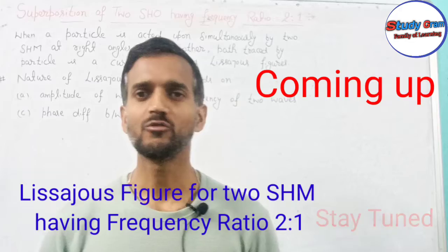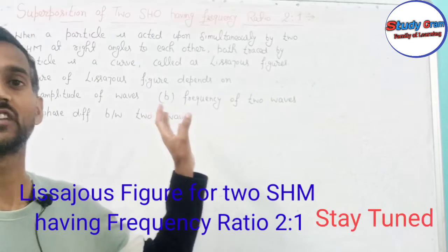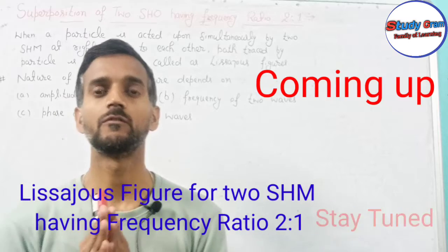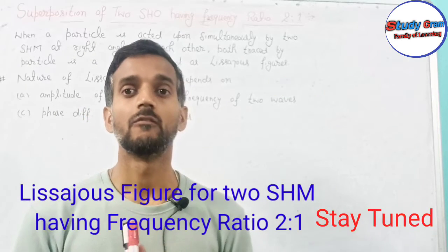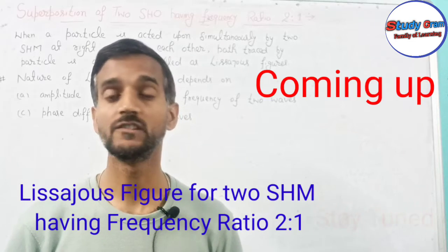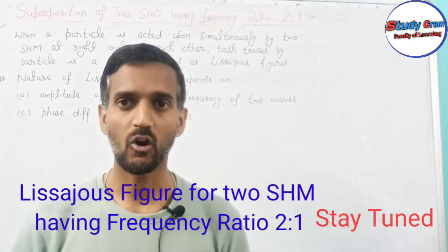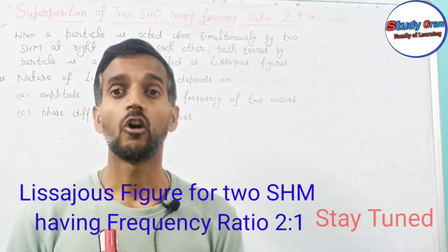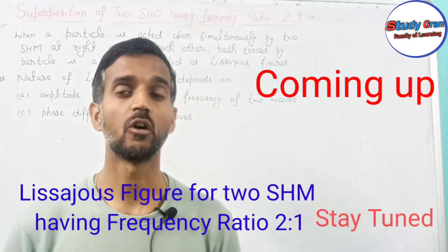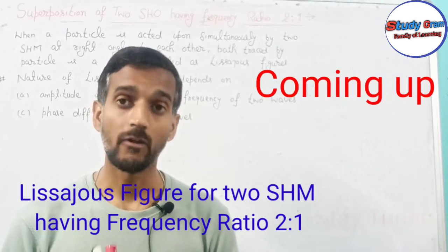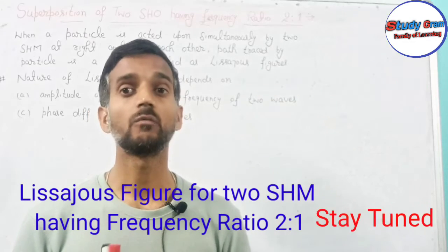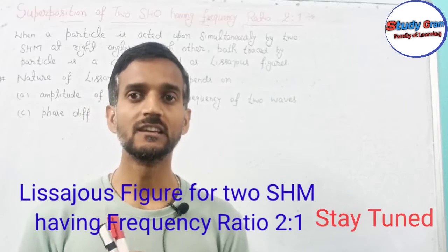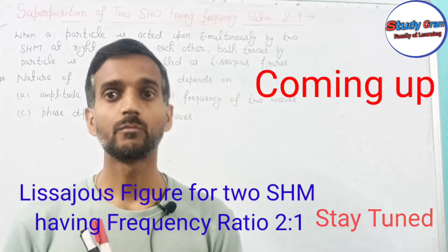The shape of a Lissajous figure depends on various factors. The first factor is the amplitude of the two superimposing waves. The second, very important factor is the frequency — what are the frequencies of the two superimposing waves. The third very important factor is the phase difference between the two superimposing waves. The phase difference can be 0°, π/3, π/6, π/4, 90°, 180°, 2π, etc.